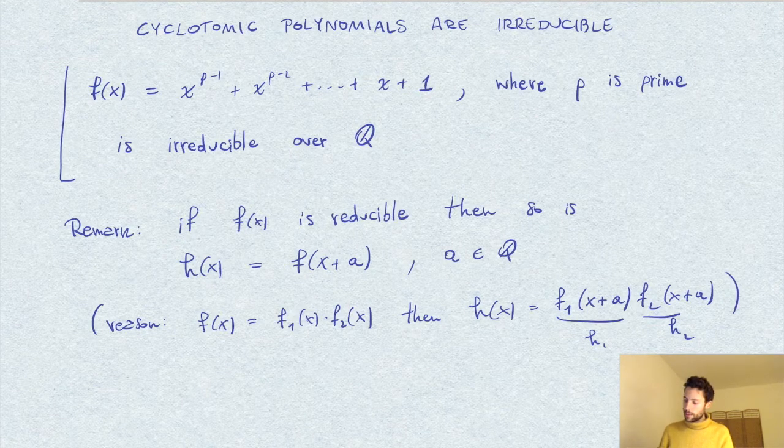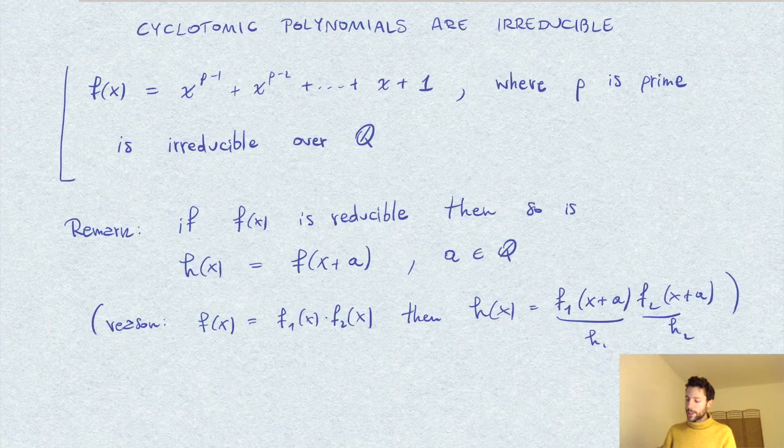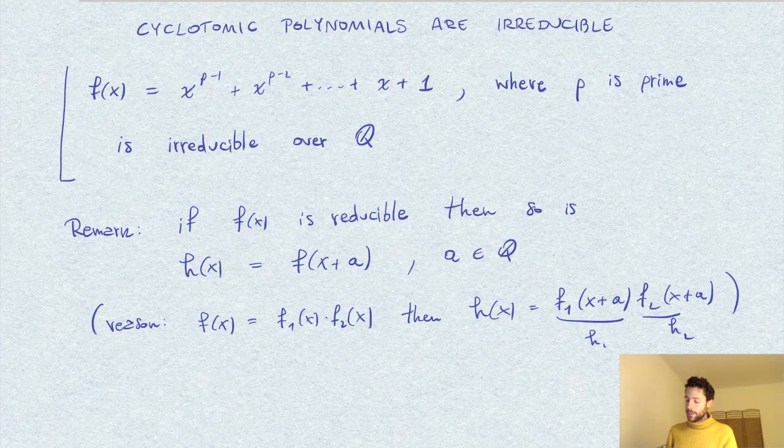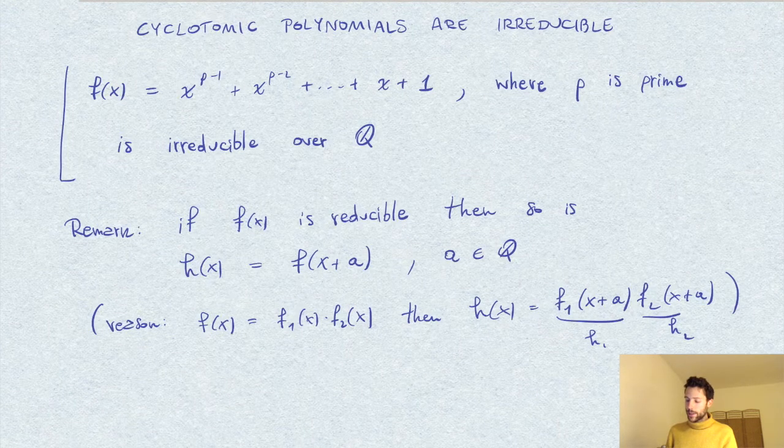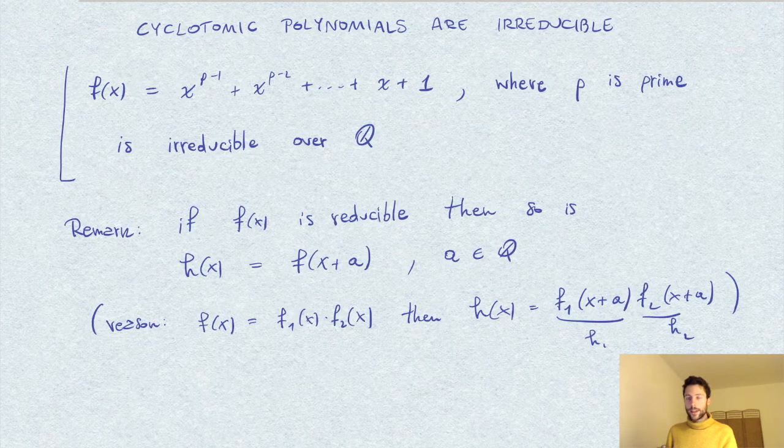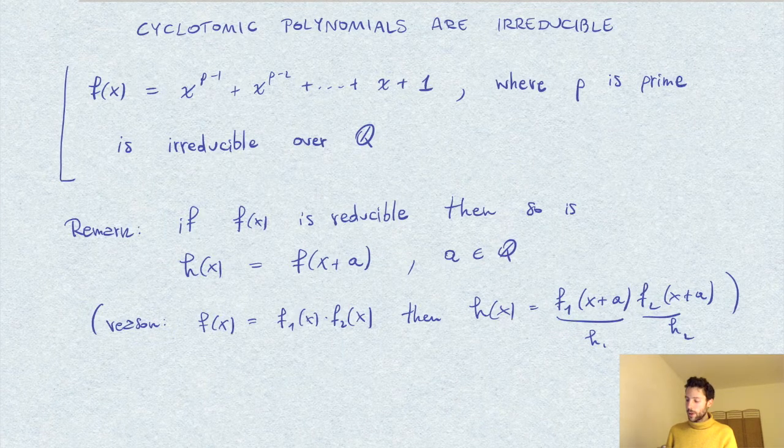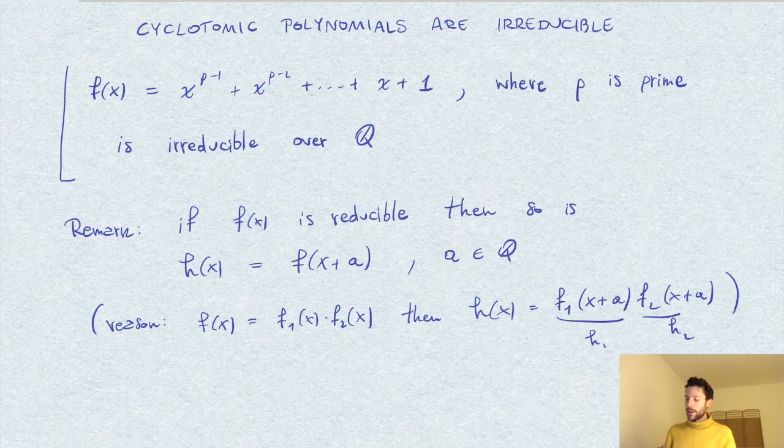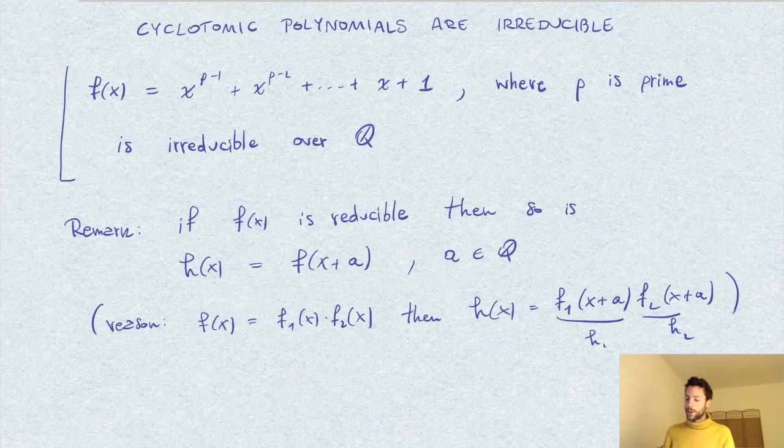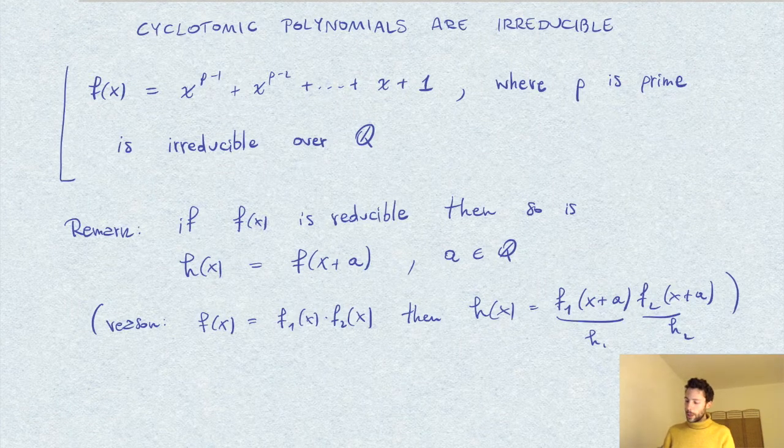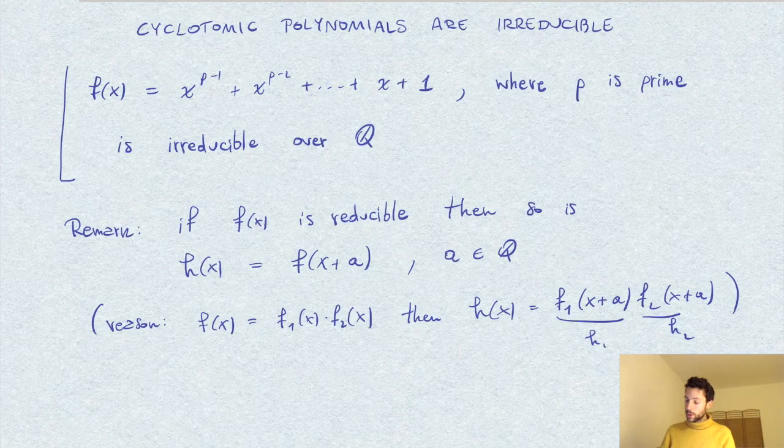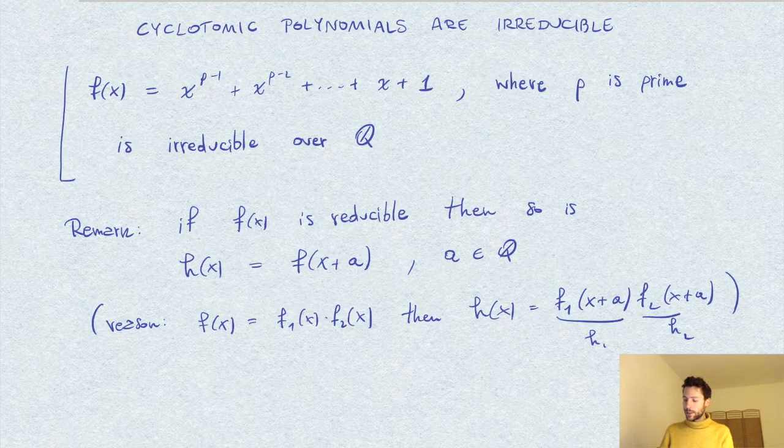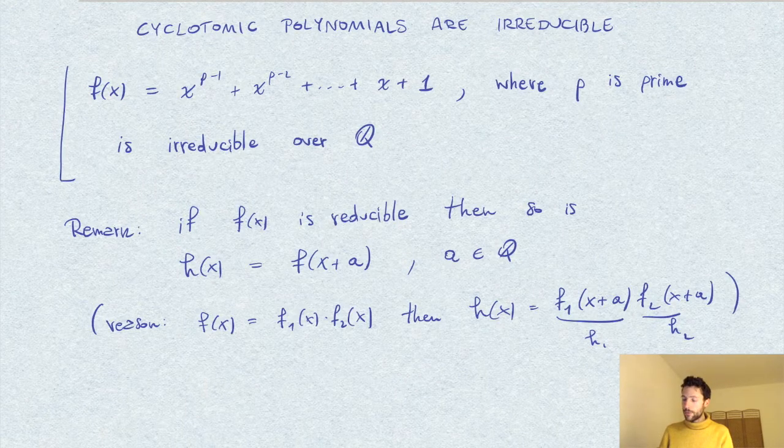This is one thing that we can do. A deeper reason for this trick to work is that this operation x maps to x plus a is an automorphism of the field k, and so this would send irreducible polynomials under this transformation to an irreducible polynomial.